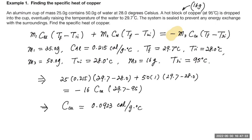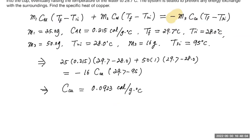So that's an example involving three substances — the aluminum cup, the water, and the copper block. When mixed together they reach the same final temperature, and from conservation of energy we find the specific heat of the copper block. This example involves no change of phase — it's just a matter of changing temperature through heat exchange; the phase remains the same.